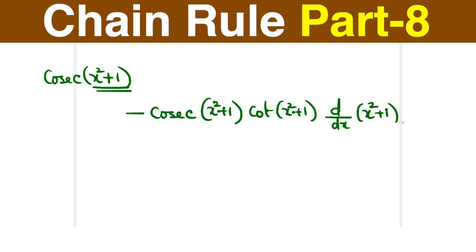So I am bringing the answer as -2x cosec(x² + 1) cot(x² + 1). Like this, try to slowly use mental calculation to perform simple chain rules.